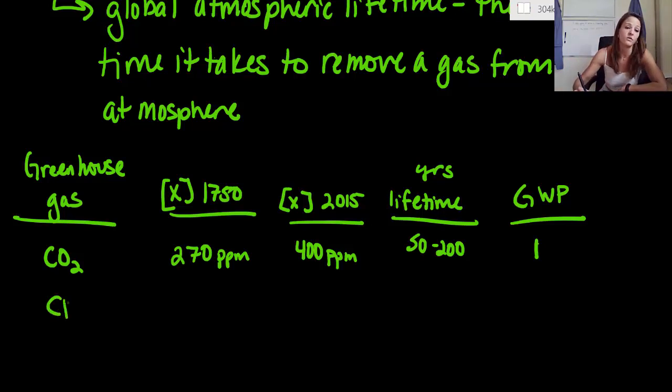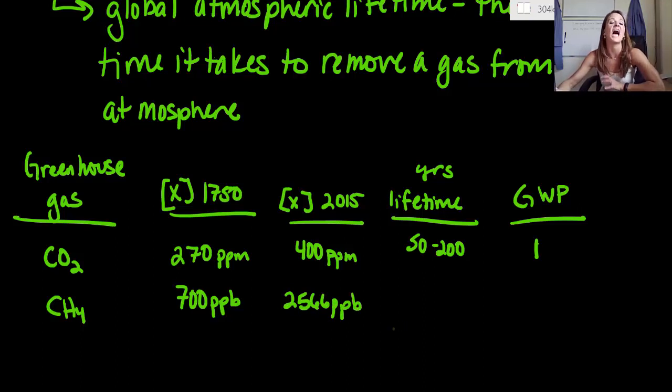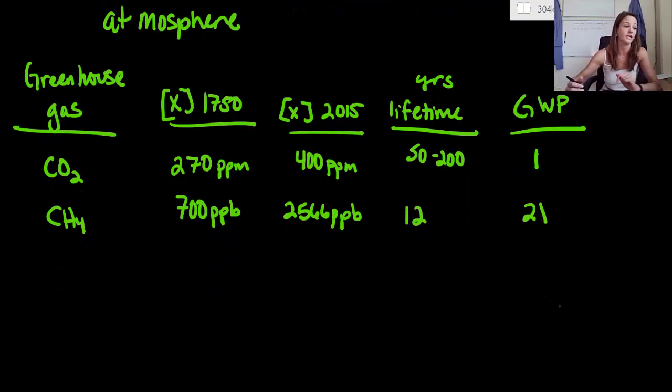The next one is methane or CH4. Its concentration in the year 1750 was 700 ppb or parts per billion. In the year 2015 it is now 2,566 ppb. So this has increased a lot, more than three times its original amount. But it only lasts 12 years in the atmosphere, so its lifetime is relatively short. It has a global warming potential of 21, still worse than carbon dioxide.